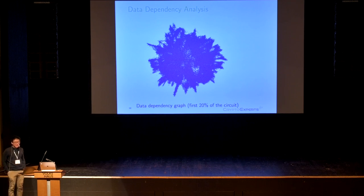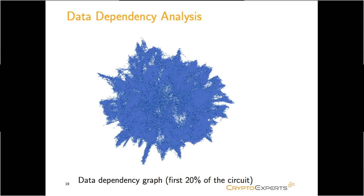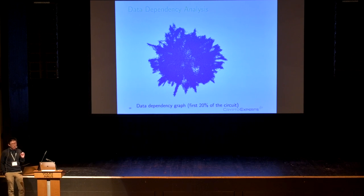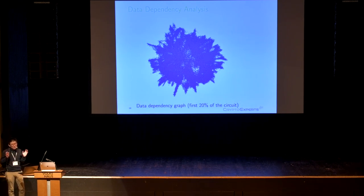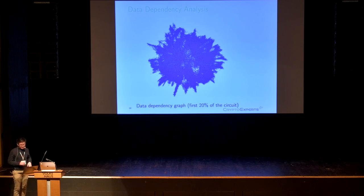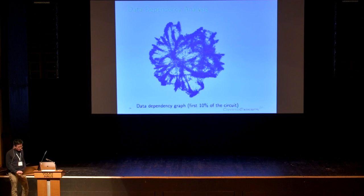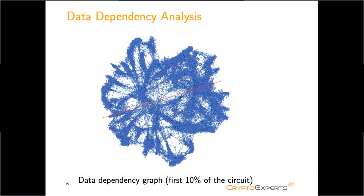Then we perform a data dependency analysis of the minimized circuit. One way to do it is to plot its data dependency graph, where a vertex stands for a variable and directed edges indicate a data dependency relation — the ending vertex relies on the starting vertex. However, it was too costly to plot the data dependency graph for the whole circuit. We managed to plot the first 20% of it, but it looked like a mess. We reduced to the first 10%, and some structural leakage began to appear.